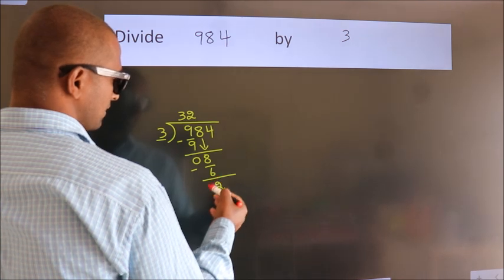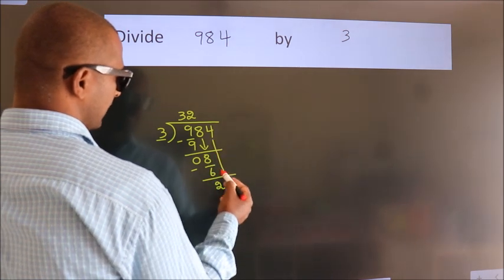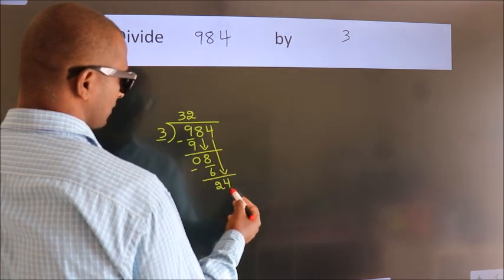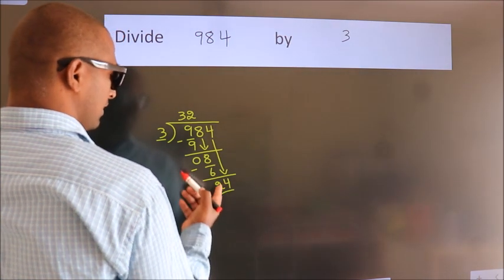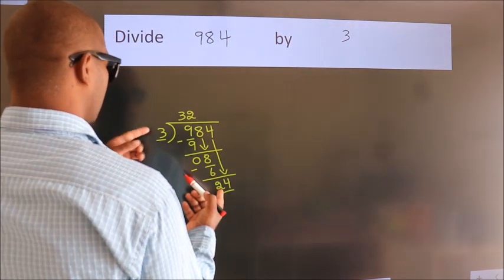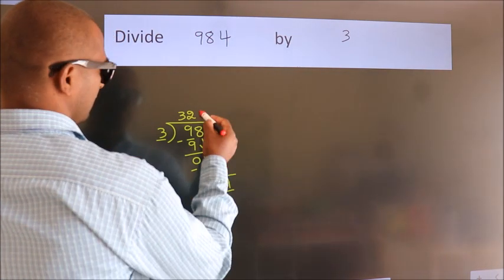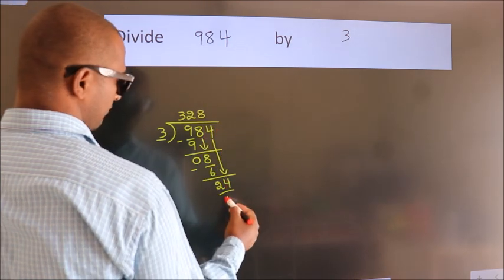After this, bring down the beside number. So, 4 down. So, 24. When do we get 24? In 3 table, 3 times 8 is 24.